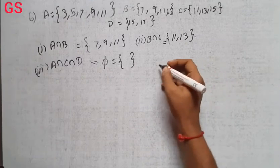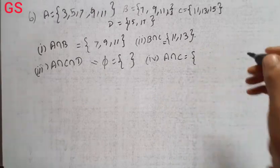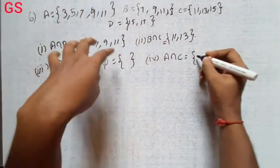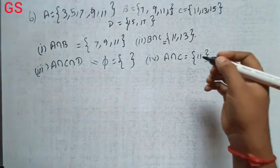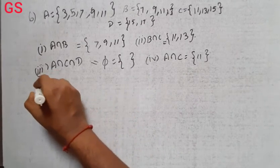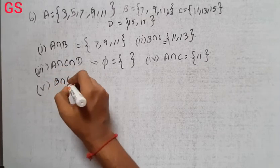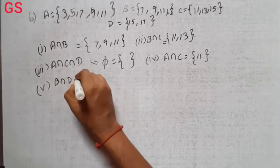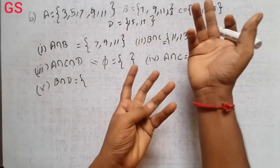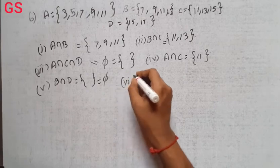Fourth one is A intersection C. A and C, 11 is common. Next is the fifth subdivision: B intersection D. B and D have no common elements, 13 and 17 are not common, so empty set.